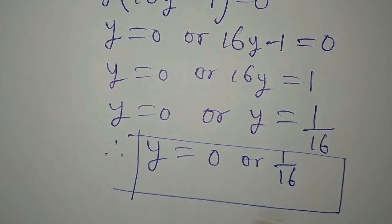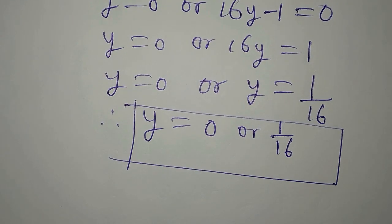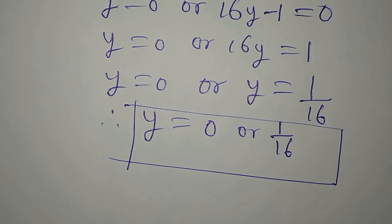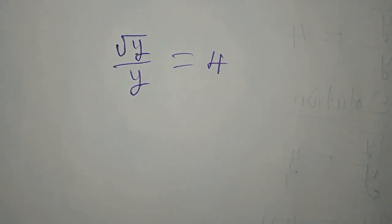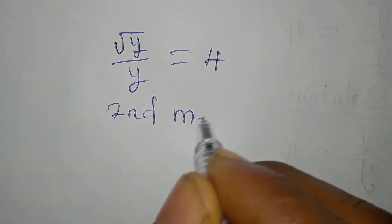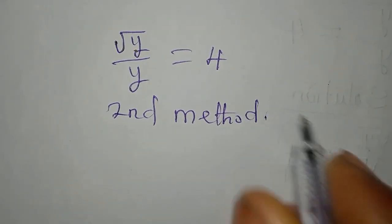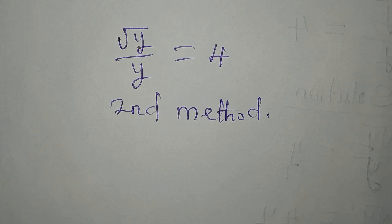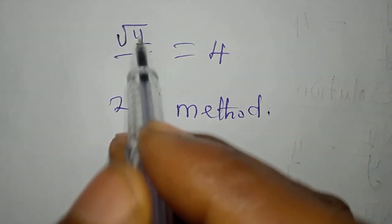Remember this is the solution, but then let's look at the other method. The equation still remains square root of y over y equals 4. I am trying to use the second method to solve this and then we compare the solutions.